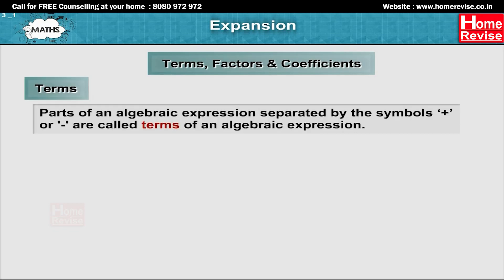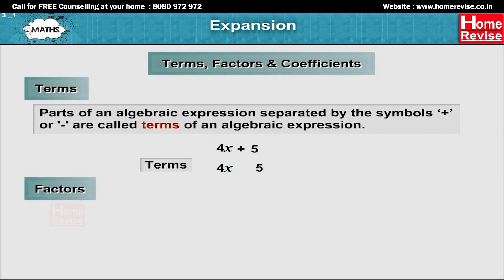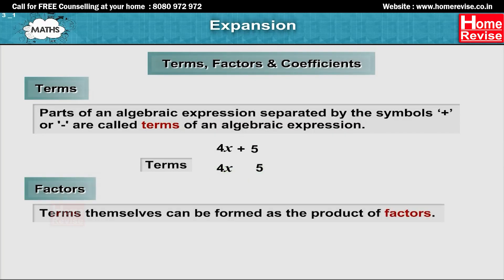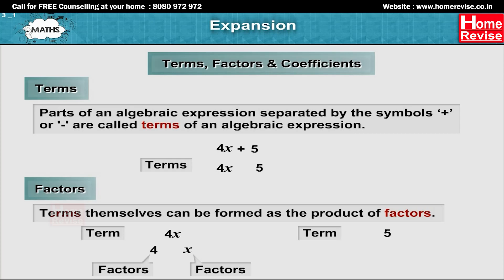Terms: Parts of an algebraic expression separated by the symbols plus or minus are called terms of an algebraic expression. Take the expression 4x plus 5. This expression is made up of two terms: 4x and 5. Terms are added to form expressions. Factors: Terms themselves can be formed as a product of factors. The term 4x is the product of its factors 4 and x.